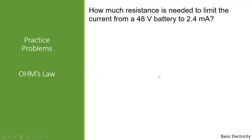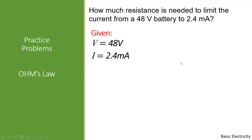Another Ohm's Law problem: how much resistance is needed to limit the current from a 48 volt battery to 2.4 milli Amperes? Given: V = 48 volts — no prefix on voltage. Current = 2.4 milli Amperes, so we have to consider the prefix value: 2.4 × 10⁻³ Amperes.